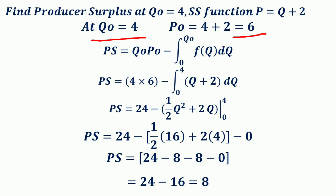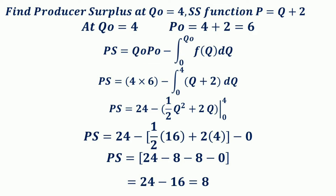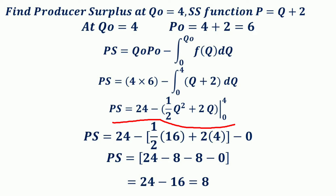After getting the equilibrium price and quantity — P0 = 6 and Q0 = 4 — the next step is to substitute these values and the supply function into the formula for producer surplus. The producer surplus equals Q0 × P0 minus the integral from 0 to Q0 of F(Q) dQ. Substituting, PS = 4 × 6 − ∫₀⁴ (Q + 2) dQ. The integral of Q + 2 is (1/2)Q² + 2Q, evaluated at the upper limit 4 and lower limit 0.